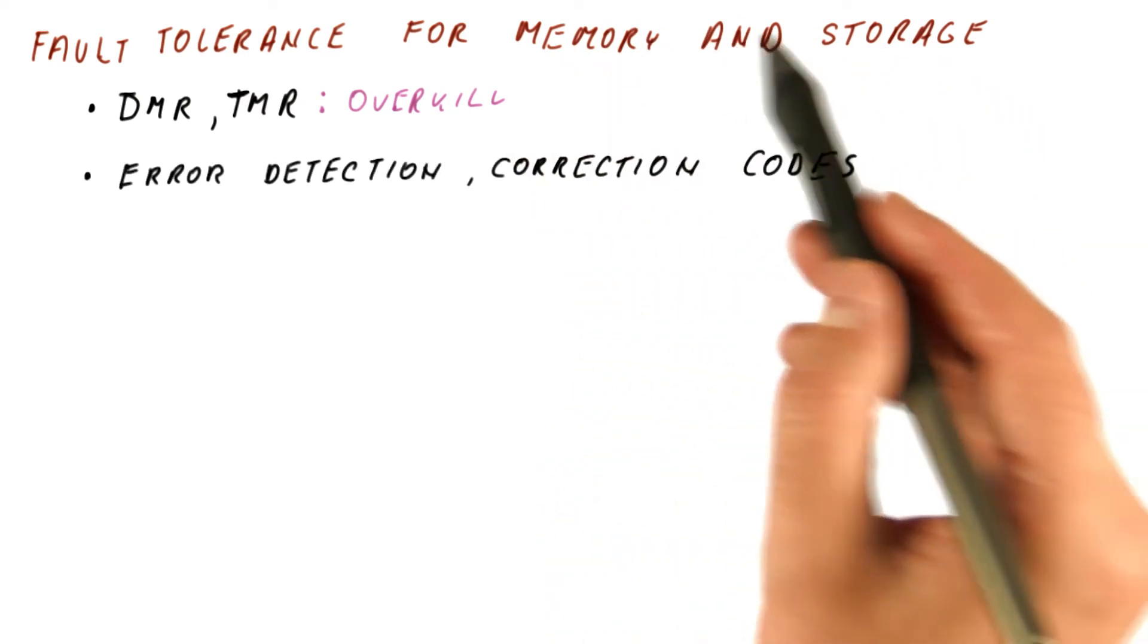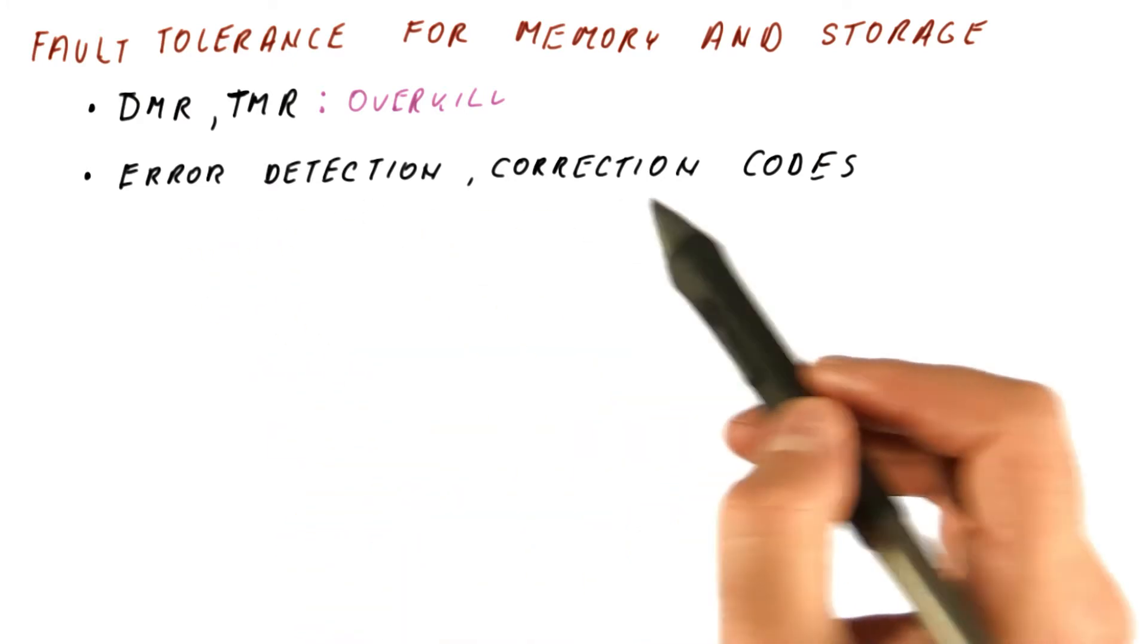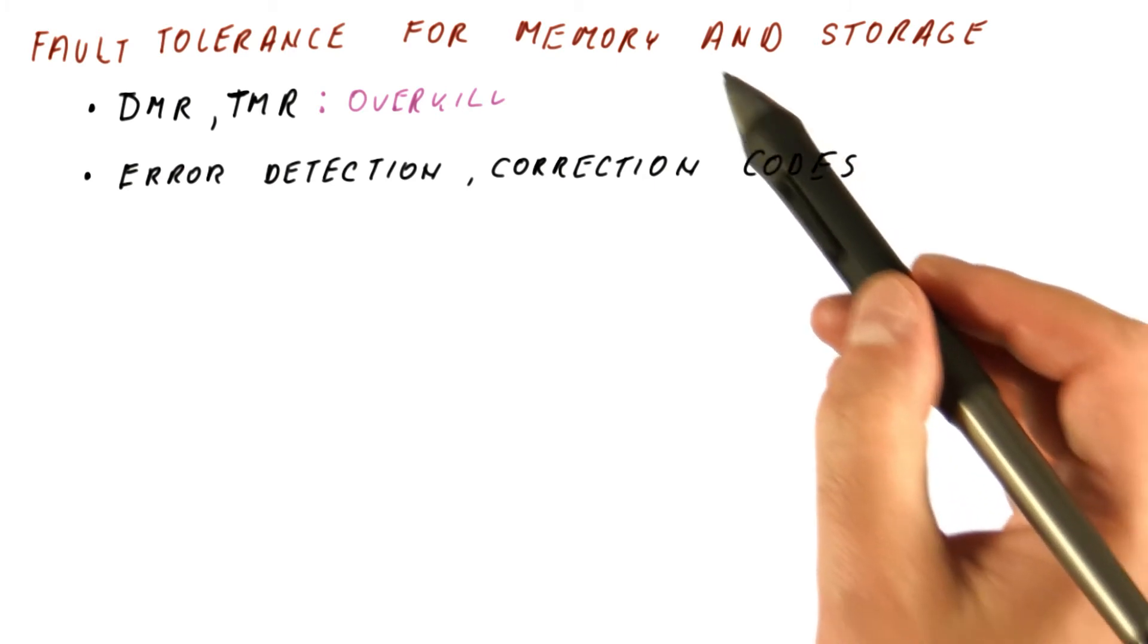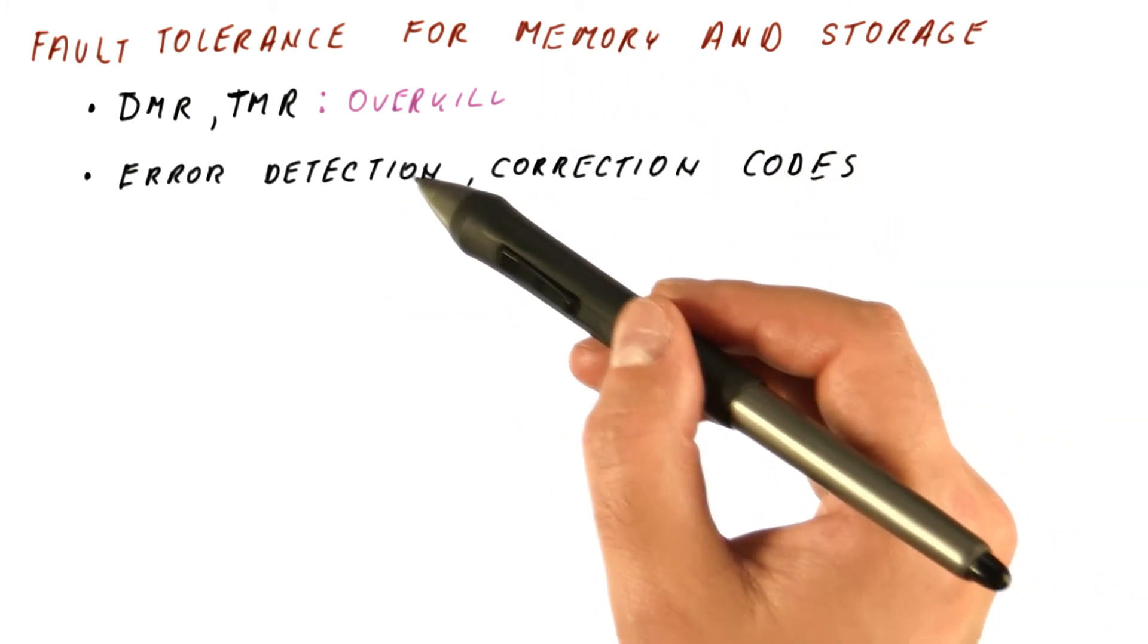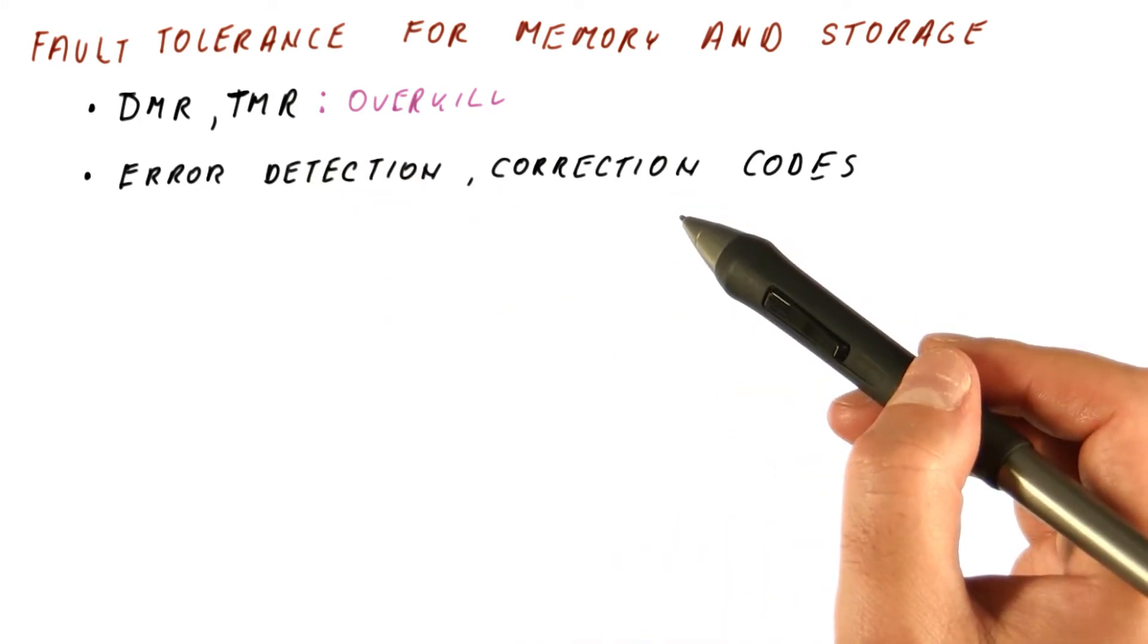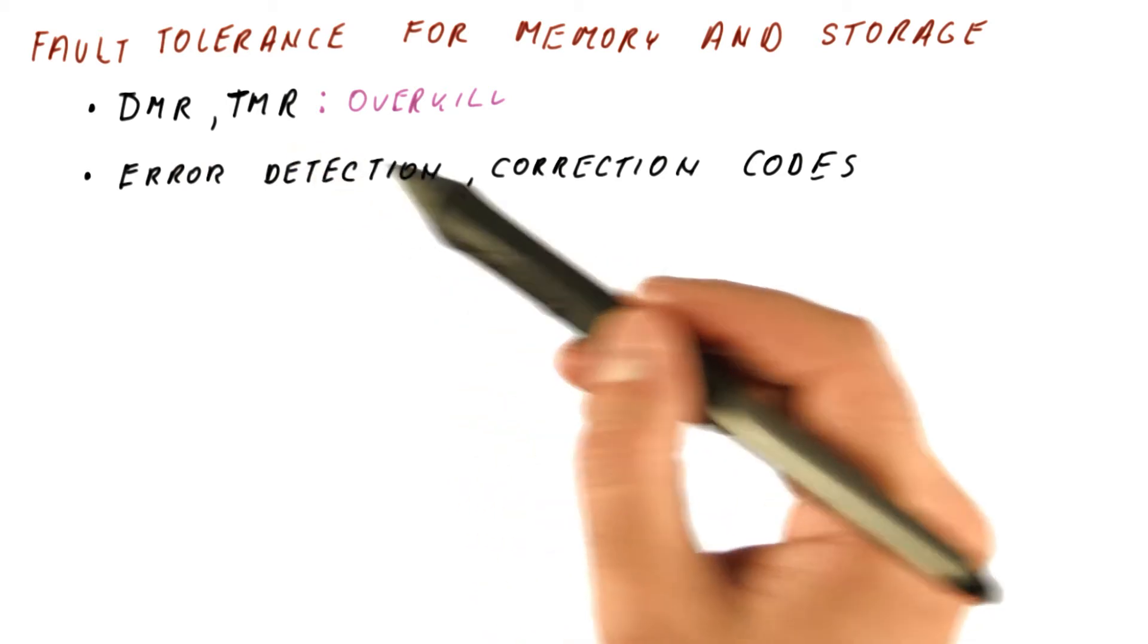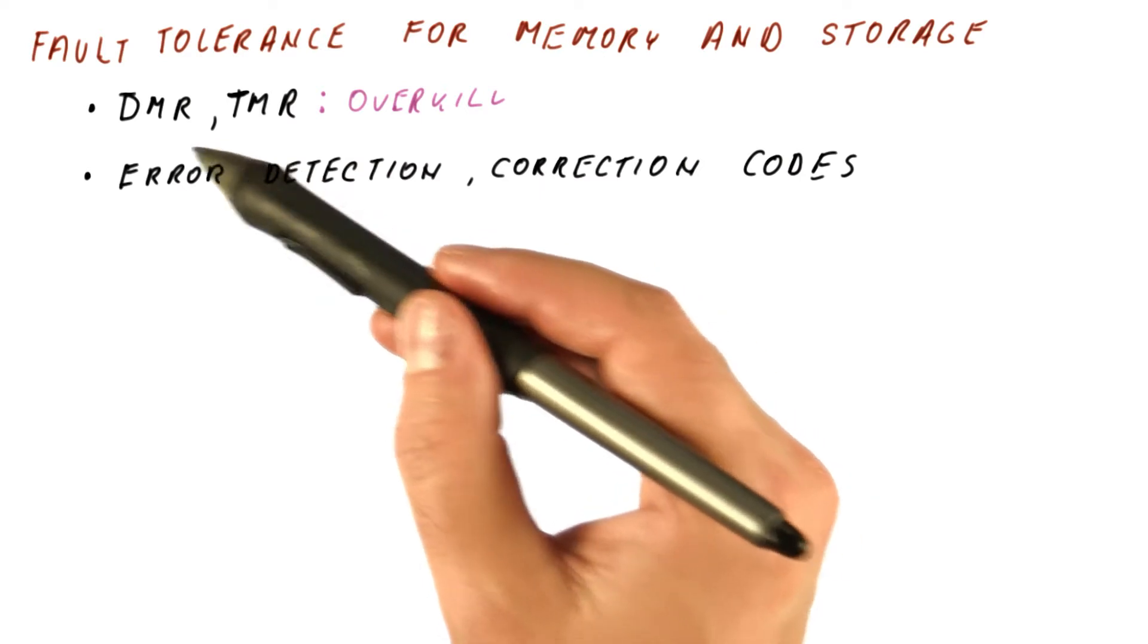These techniques for memory and storage are called error detection or error correction codes. The idea is that we can store bits with some extra information that allows us to detect and/or correct one or more bits of error depending on the code. We don't have to store everything twice or three times in order to achieve detection or correction of a single error.